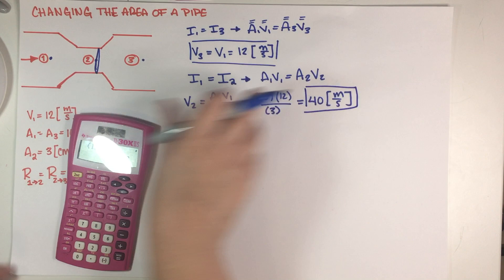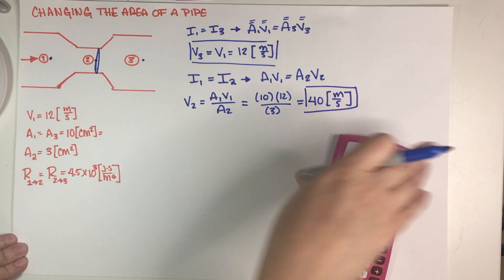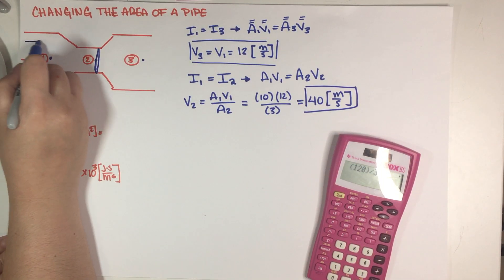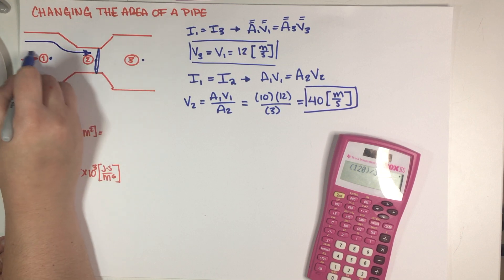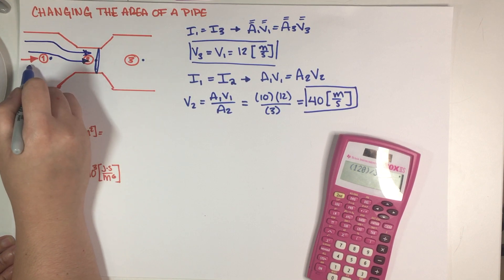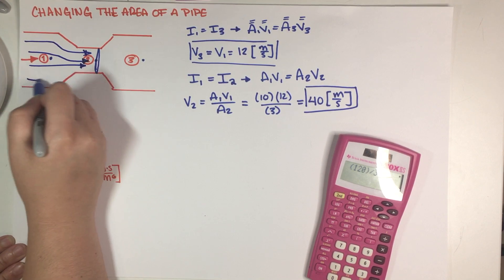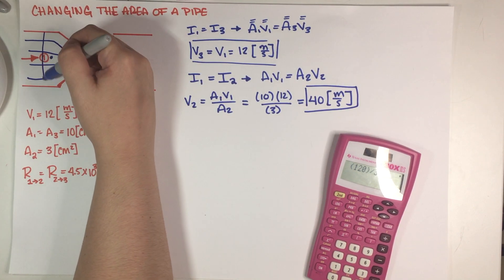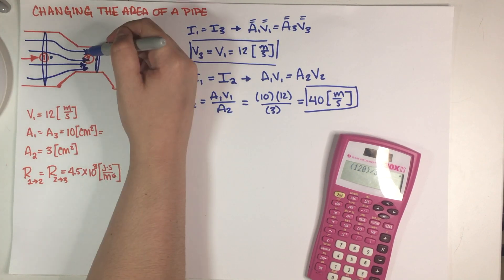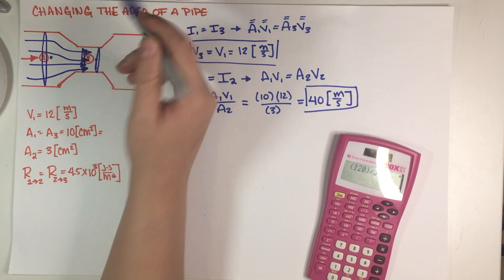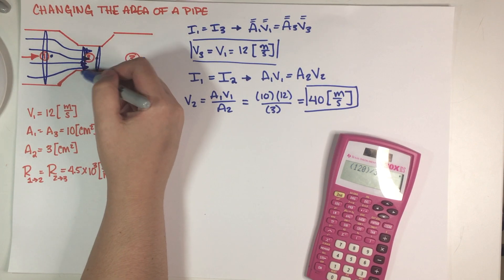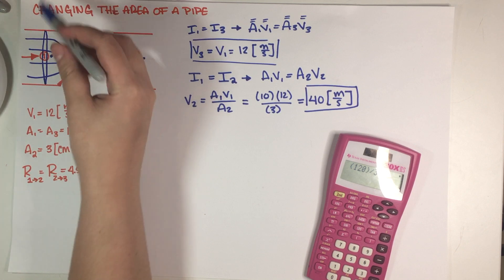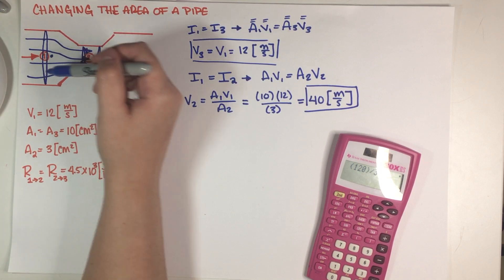Another quick thing before we move into the next part of the problem is that if you actually draw your flow lines, which is something that you don't necessarily have to do but it is also helpful, as you can see over here and over here, your flow lines are closer to each other over here and they are more separated from each other over here.